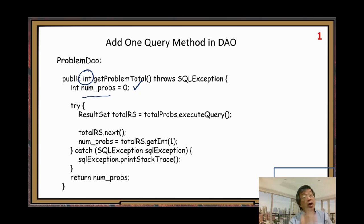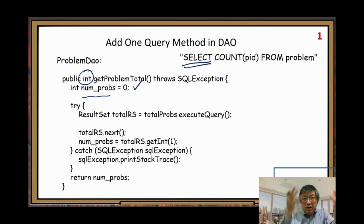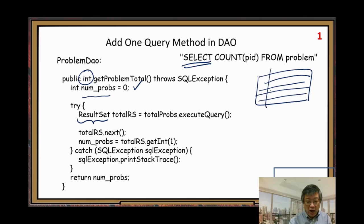First, result set, because we use the select statement. Select statement. We expect return result. So we need to use a result set. So this is another interface. Result set. So this object will contain the query result. Query result, usually, it is a table. You have rows, columns. Typically.